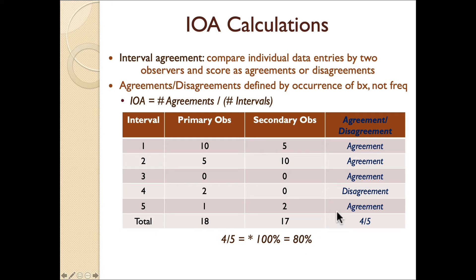With this method of calculation, you can see discrepancy between the two observers. We're only interested in whether or not behavior occurred. If we apply this to partial interval data, probably okay. For frequency data, it's not the most conservative assessment for IOA.